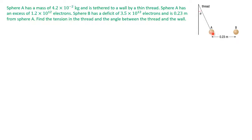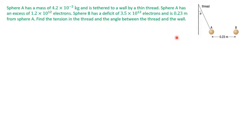So we have two spheres, sphere A and sphere B, that are both charged. Sphere A is connected to a wall by a thin thread, and the thread is at an unknown angle from the wall. We also know that sphere A and sphere B are 0.23 meters away from each other.